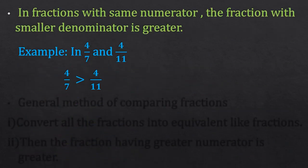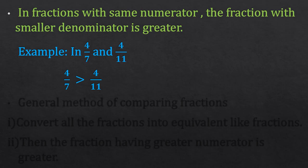In fractions with the same numerator, the fraction with the smaller denominator is greater. For example, 4 upon 7 and 4 upon 11 have the same numerator. Since 7 is smaller than 11, 4 upon 7 is greater than 4 upon 11. In this type of fraction there is an opposite rule: the smaller denominator means the larger fraction.